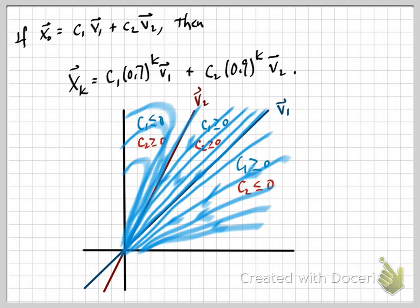A similar argument tells you that in this region where c1 is bigger than or equal to 0 and c2 is bigger than or equal to 0, you also get pulled towards the origin. There might be a slight increase in squirrels and owls based on these coefficients, but eventually 0.7 to the k and 0.9 to the k are going to shrink fast enough that you get pulled to the origin.